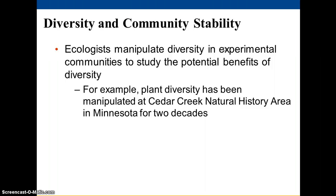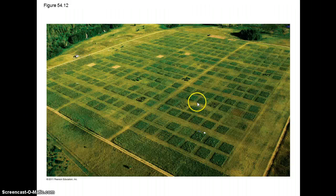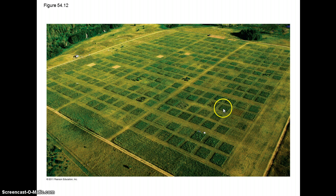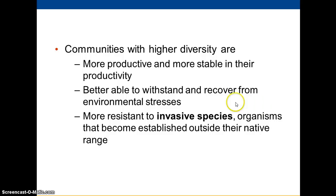It's thought that there's a relationship between diversity and the stability of a community. This has been studied at the Cedar Creek Natural History Area in Minnesota, where they've got a field with plots of grassland. They have control groups they let go, others where they reduce diversity, and others where they enhance diversity. What they find is that when these mini-communities have higher diversity, they have more productivity and they're more stable — they can withstand stress. If there's a drought, they tend to be more resilient and tolerate those conditions, and can be more resistant to invasive species compared to less diverse habitats.